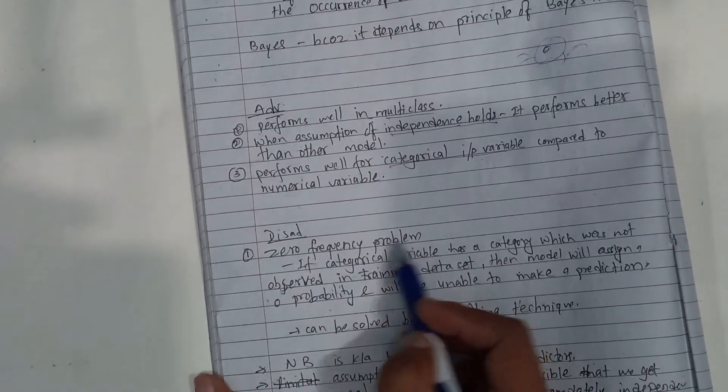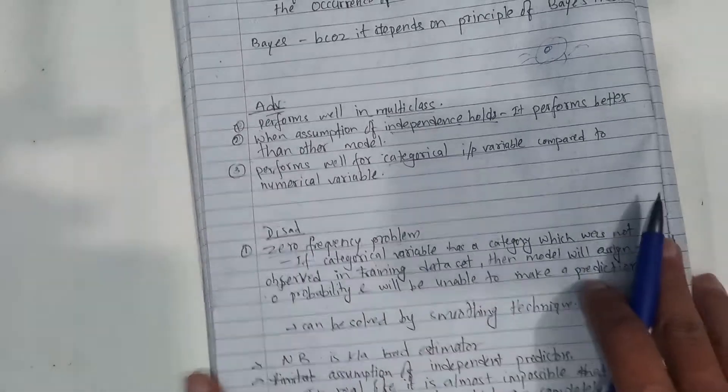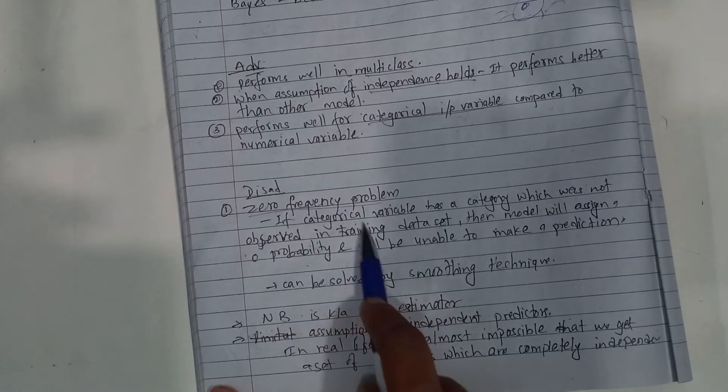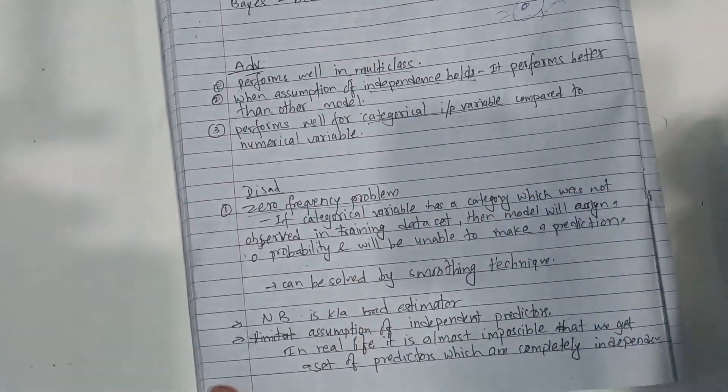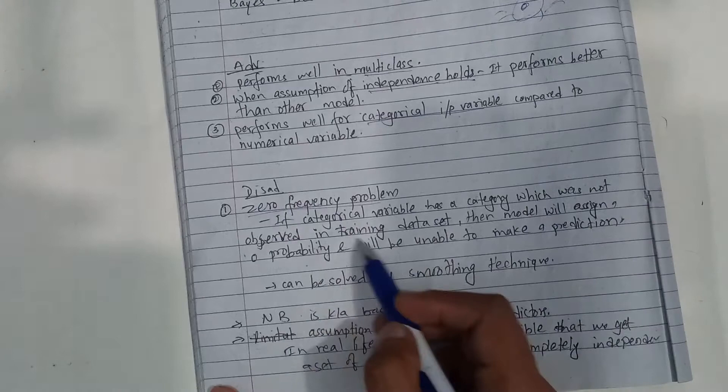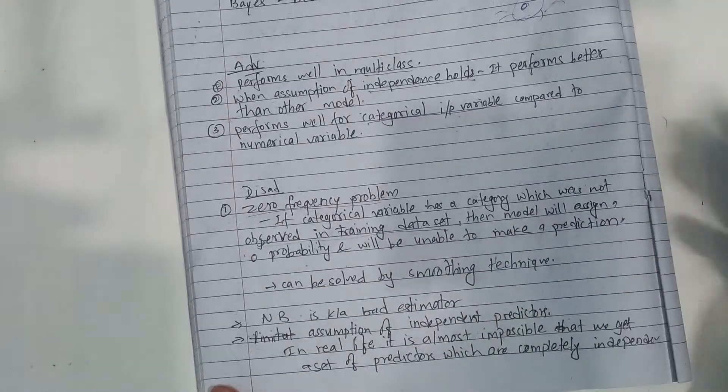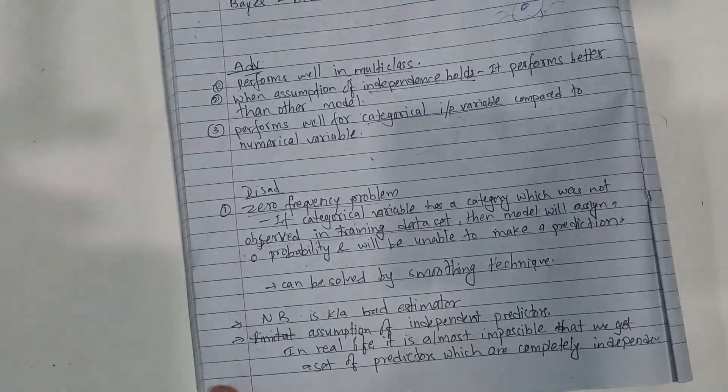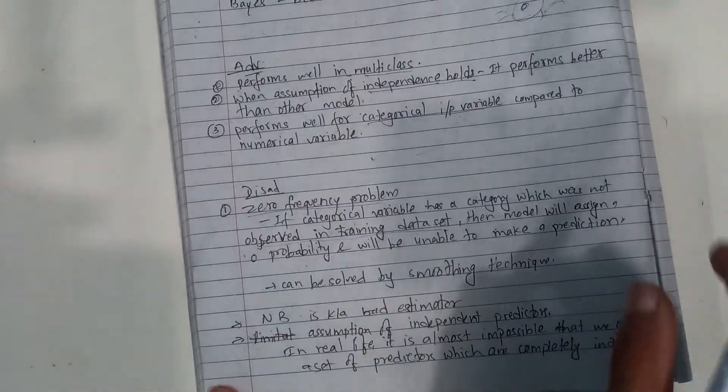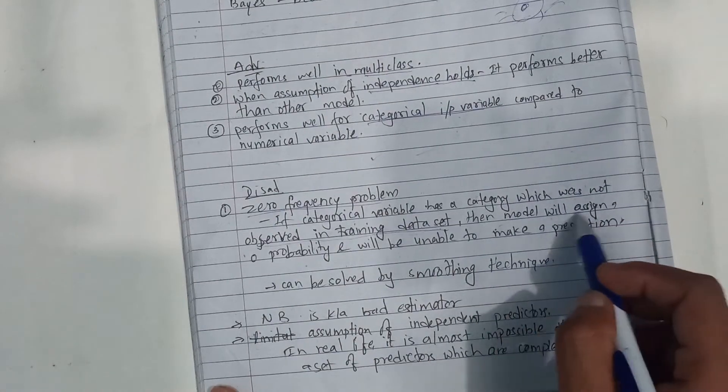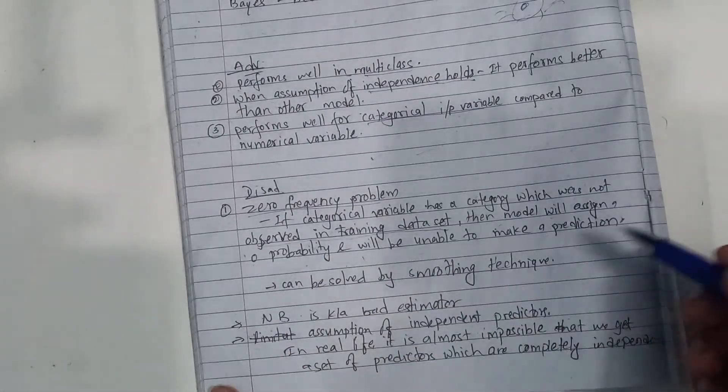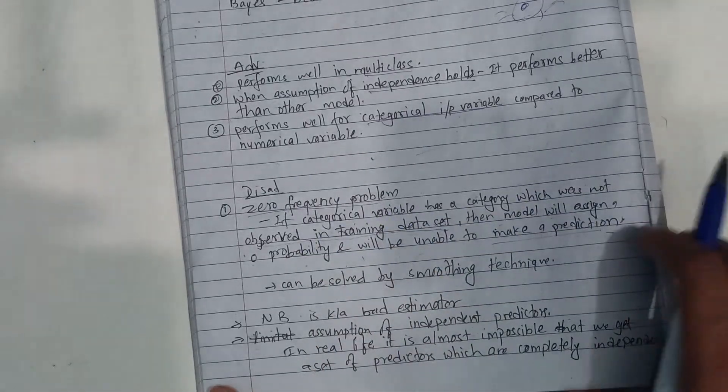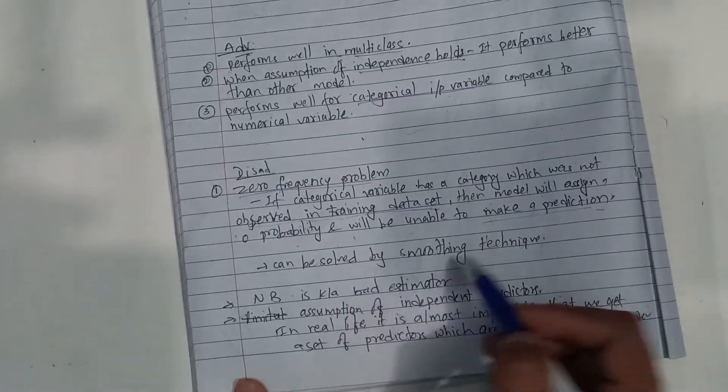The zero frequency problem occurs when a categorical variable that is not observed in training data causes the model to assign zero probability and be unable to make a prediction. This can be solved by smoothing techniques.